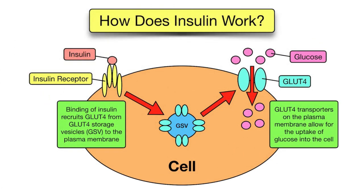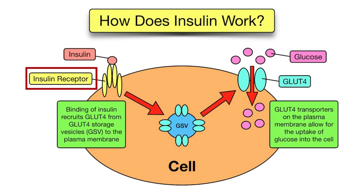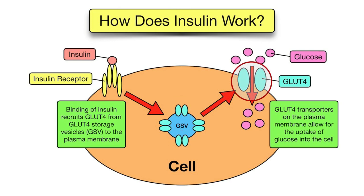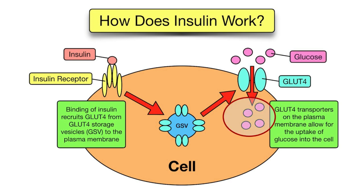Let's see how insulin works. Once the beta cells of the pancreas release insulin into the blood, insulin binds to insulin receptors on the surface of body cells. This binding activates a signaling cascade which increases the recruitment of the glucose transporter GLUT4 from intracellular storage vesicles to the plasma membrane — as you can see in the figure. GLUT4 is the major transporter responsible for uptake of glucose from the bloodstream into the cell, increasing glucose uptake so cells can use it as energy.